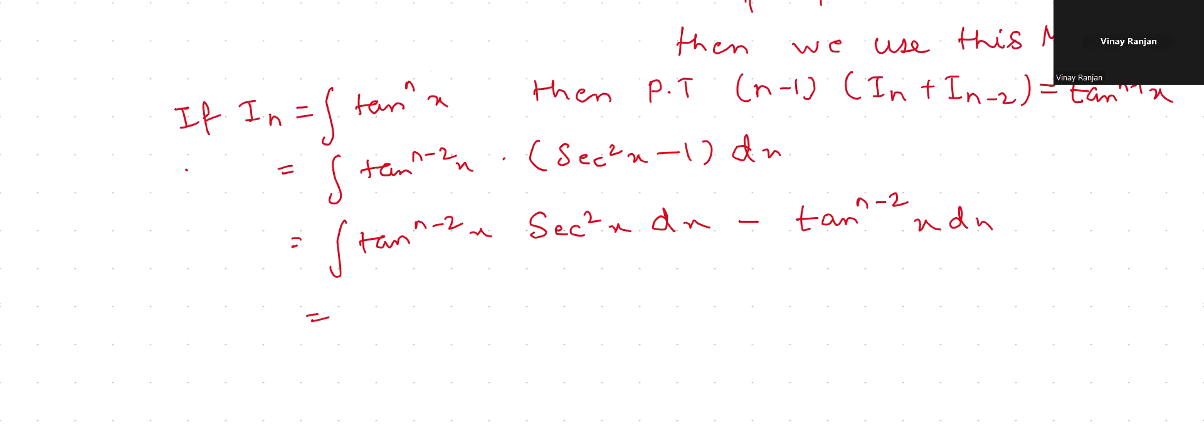Now here you would put tan x as t, so you will say t^(n-2), correct, dt. And this will be nothing but In-2. Are you getting the point?